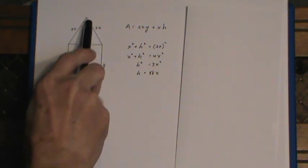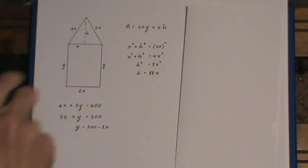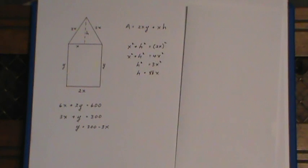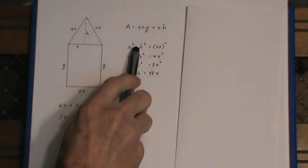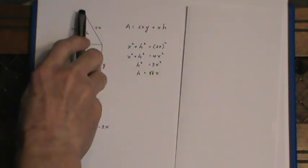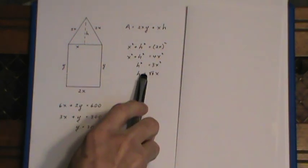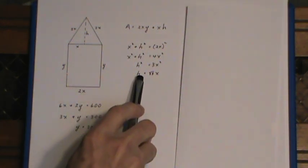But I still have to get one for the h, and I get that from the fact that I have a right-angled triangle up here, and I can use the Pythagorean theorem, x squared plus h squared equals the 2x squared, and get a substitution for h in terms of x from that.